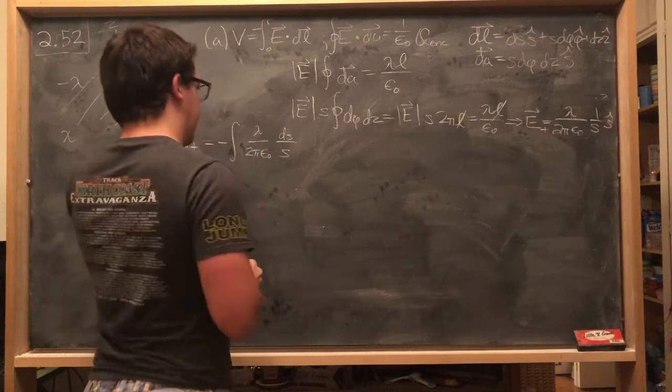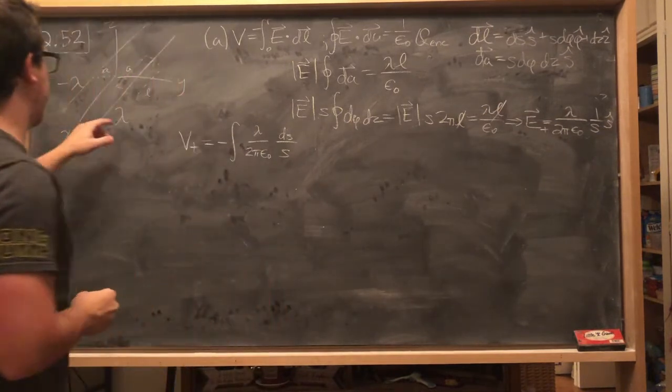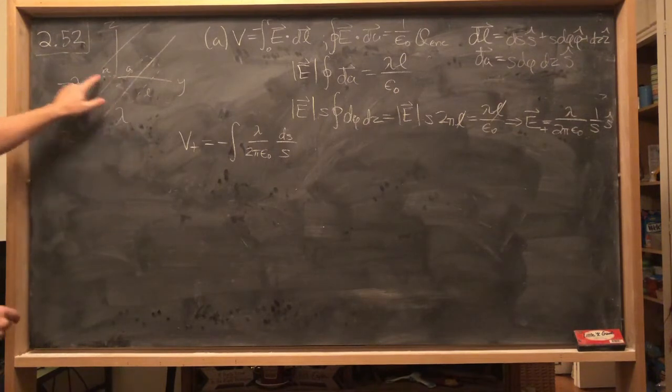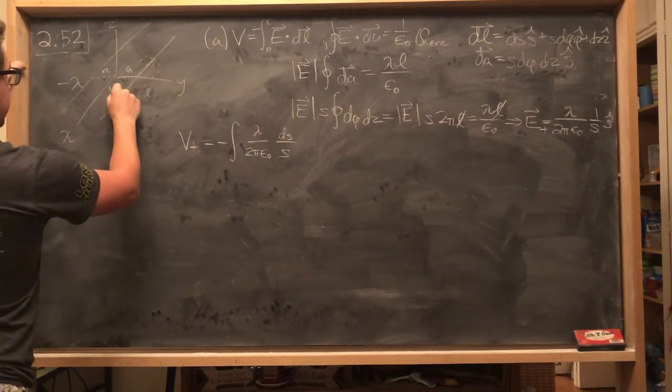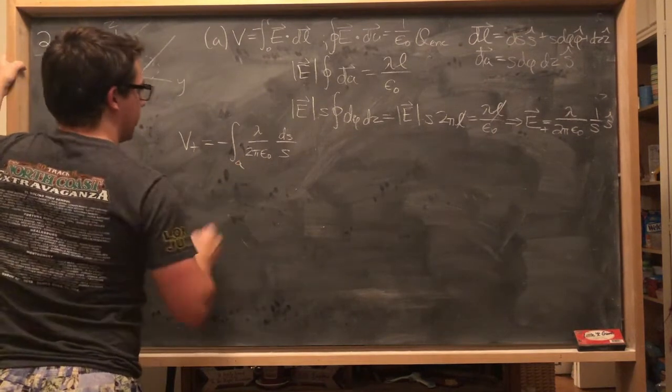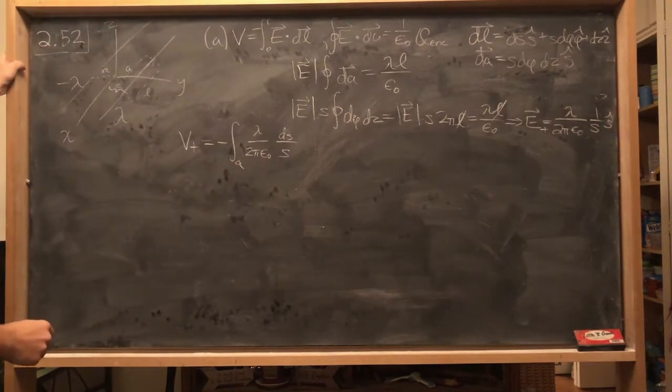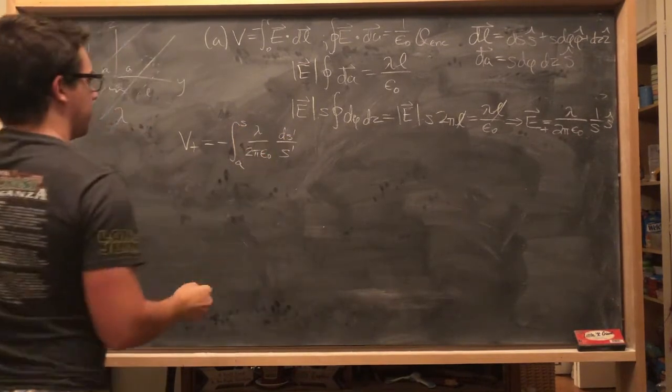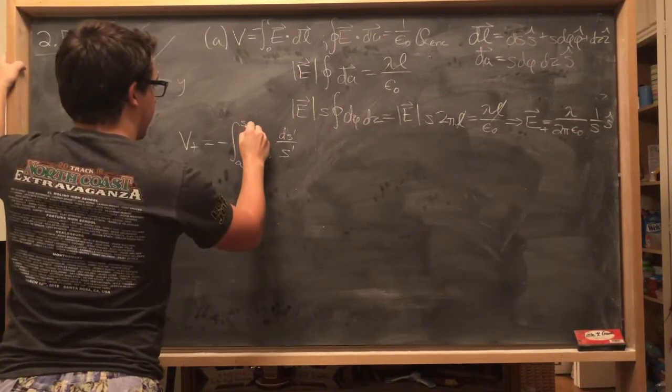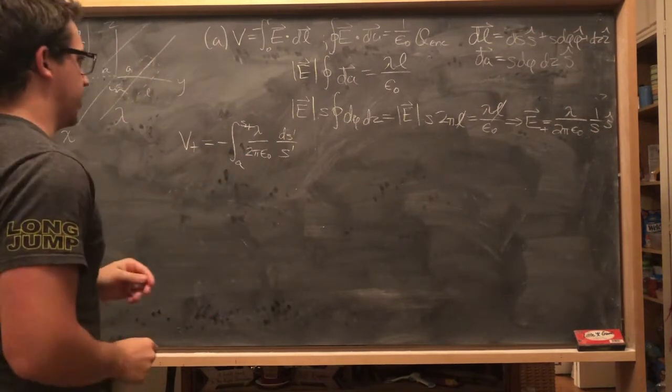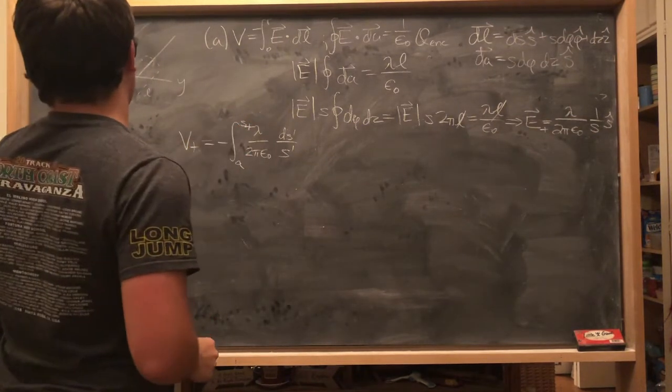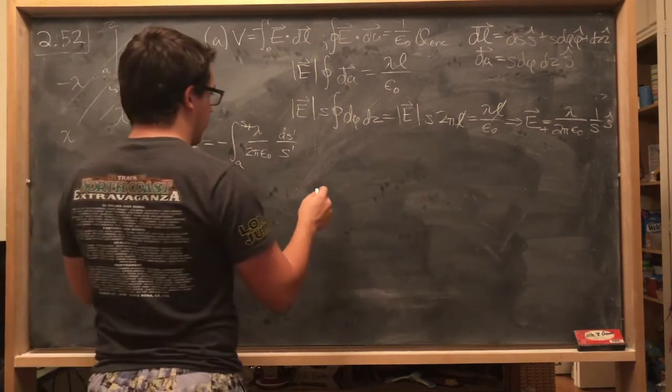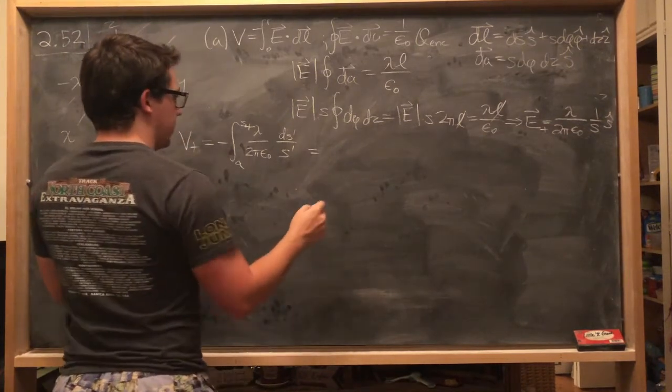Since we're integrating from S, the origin would be at S equals a, and then we'll put it out to, we could put a prime here, and then we'll put it out to some S, let's call it S plus, just to denote that it's the S for the cylinder that goes over the positive lambda.